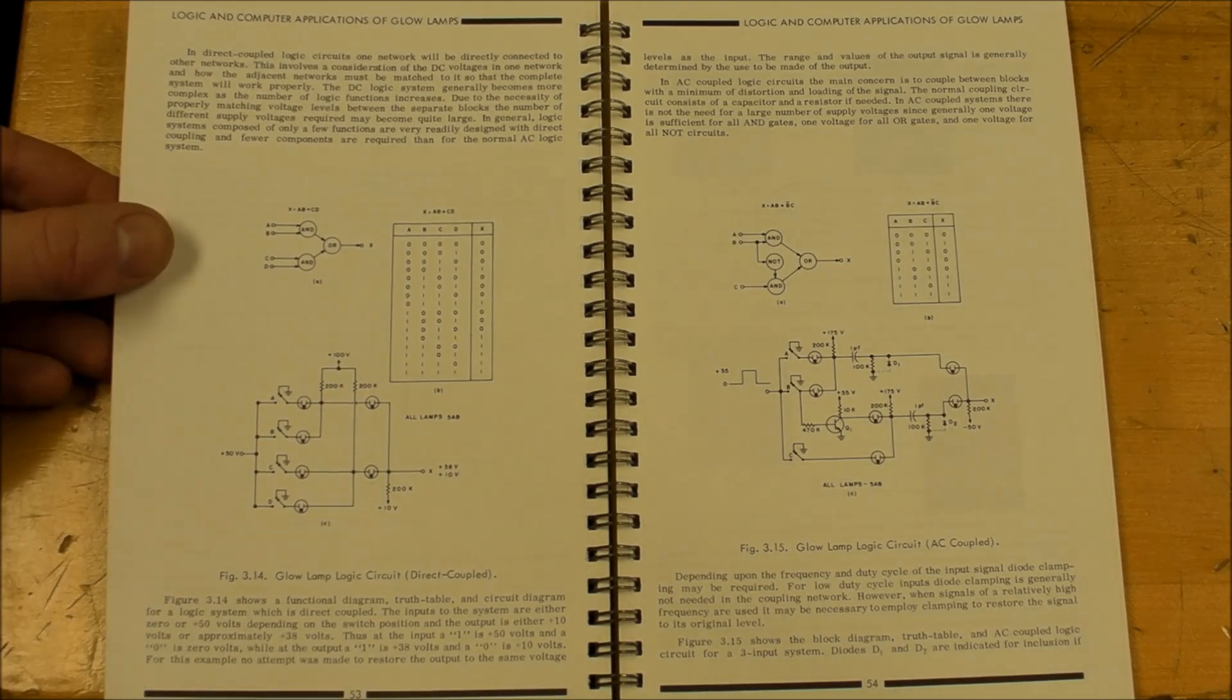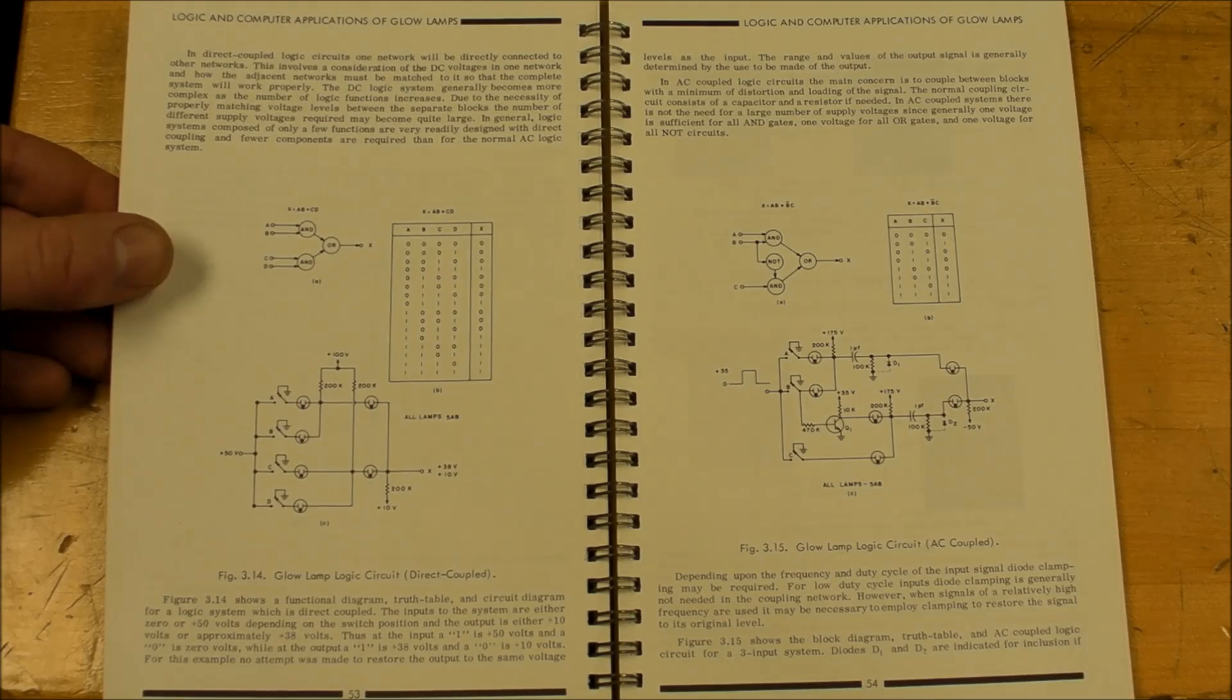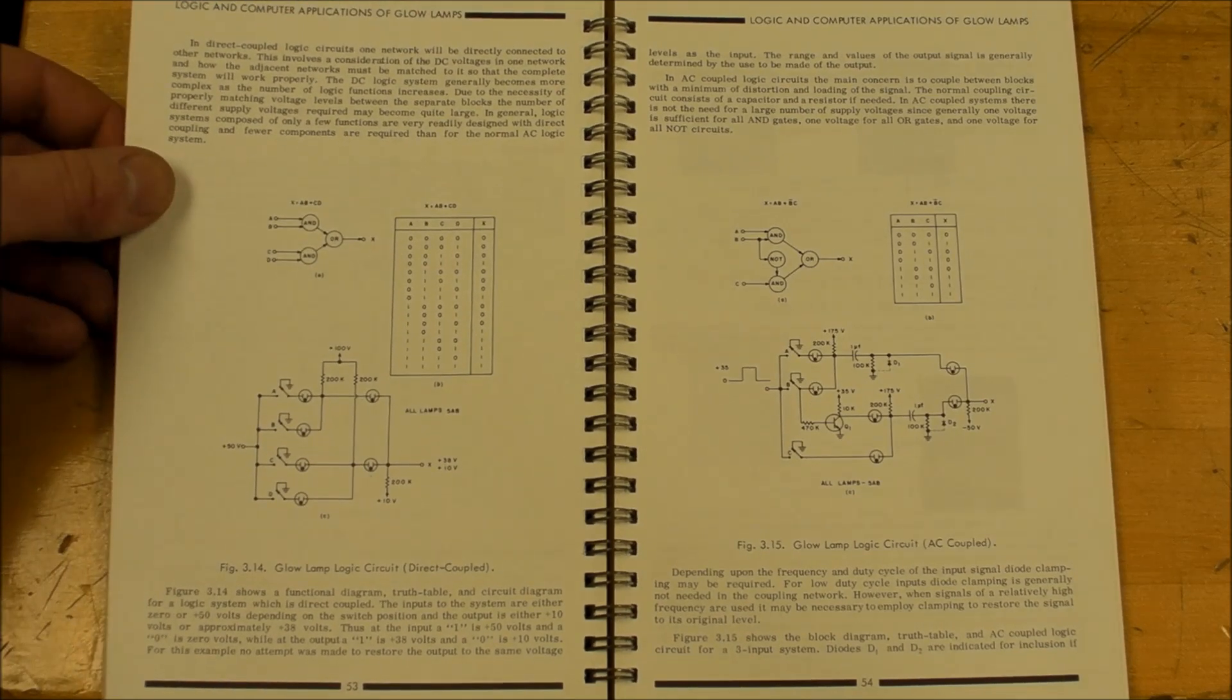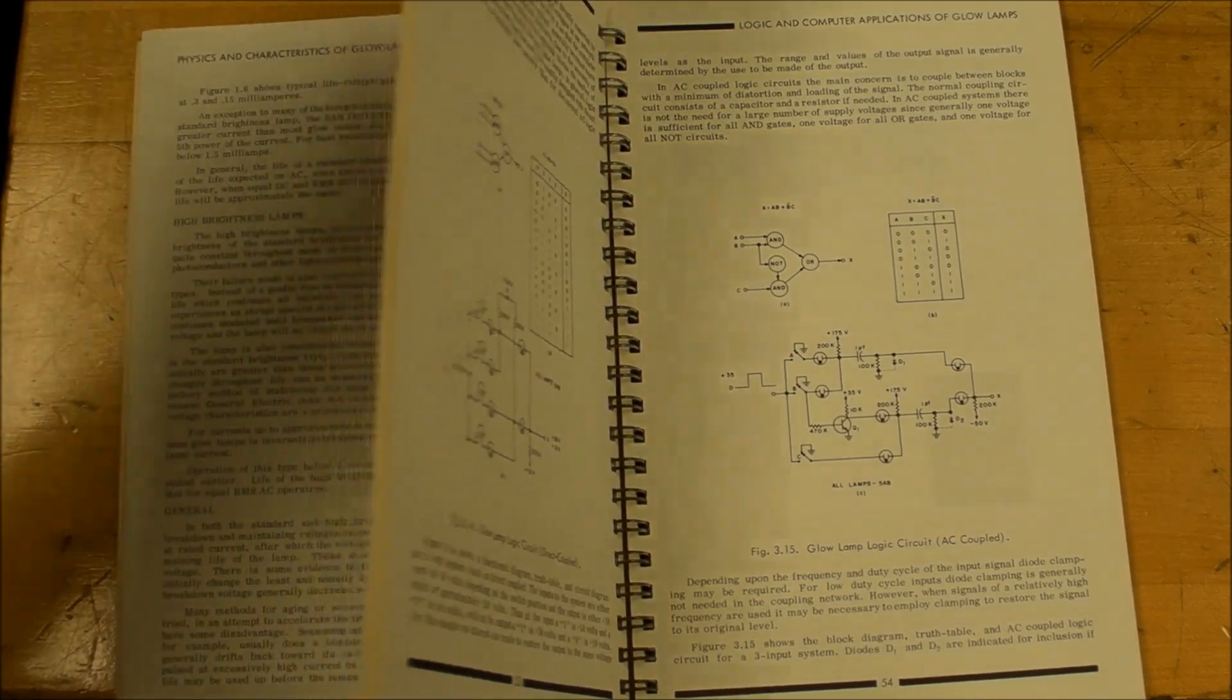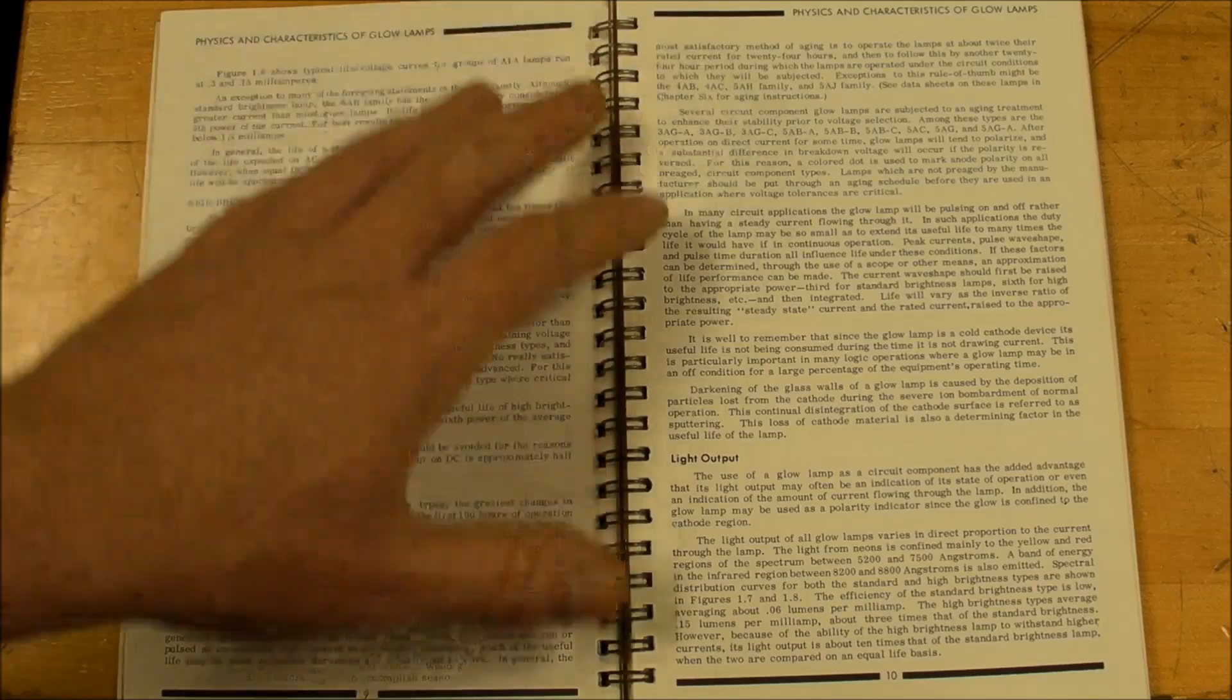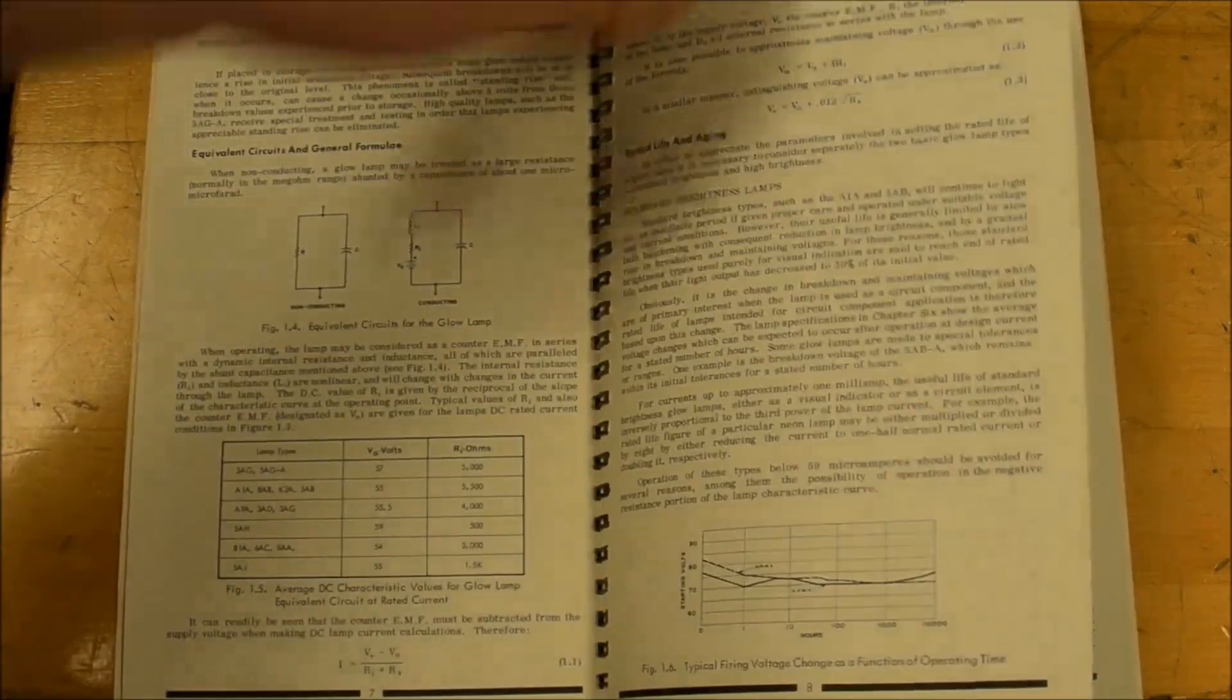I think it's absolutely amazing that you can make digital logic gates using just a bunch of neon glow lamps and resistors and maybe a transistor or two. But basically what I'm focusing on here is in the top left hand corner.